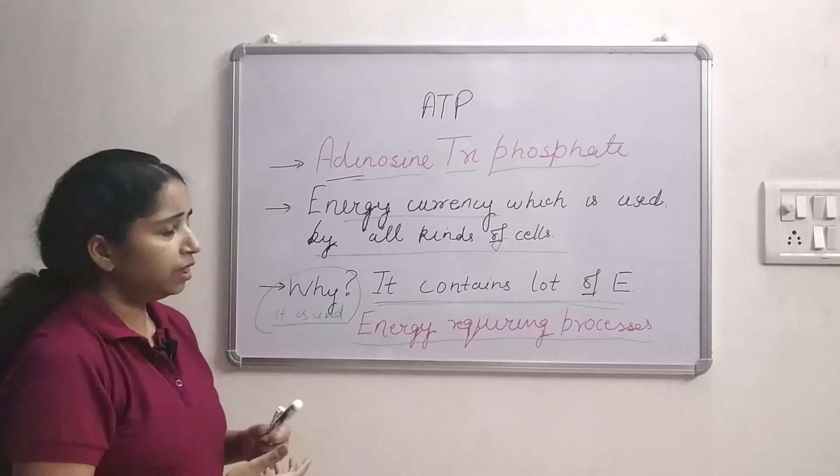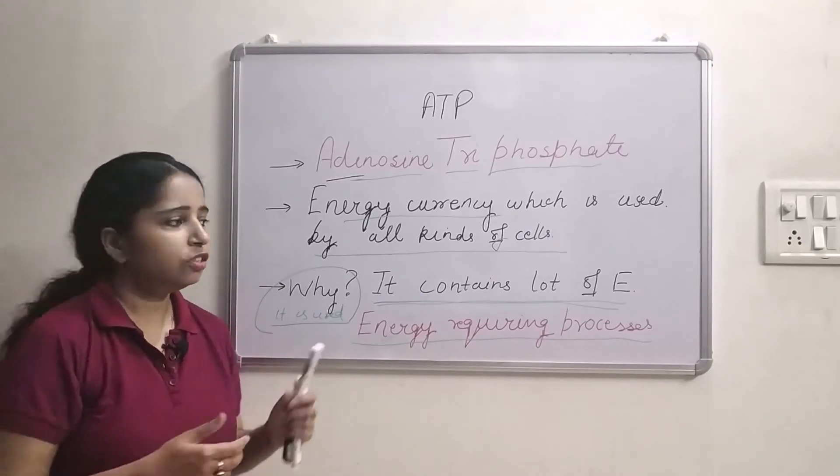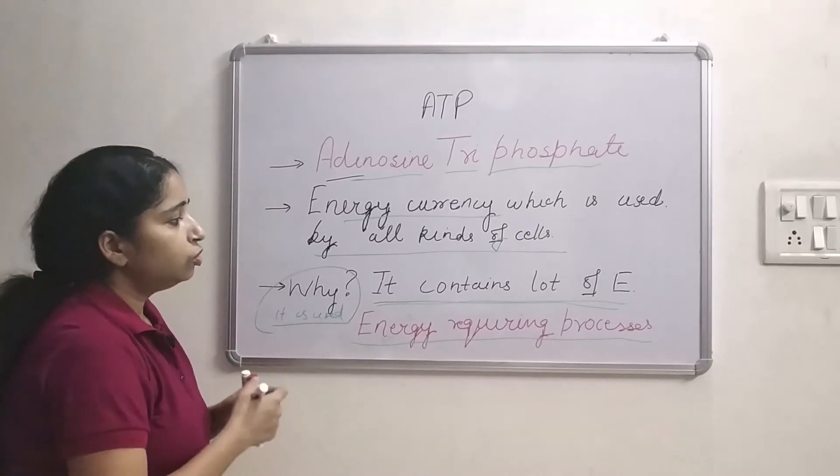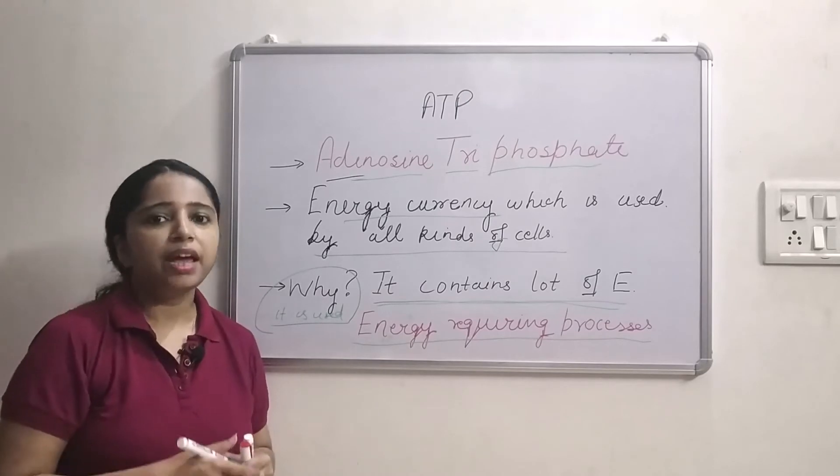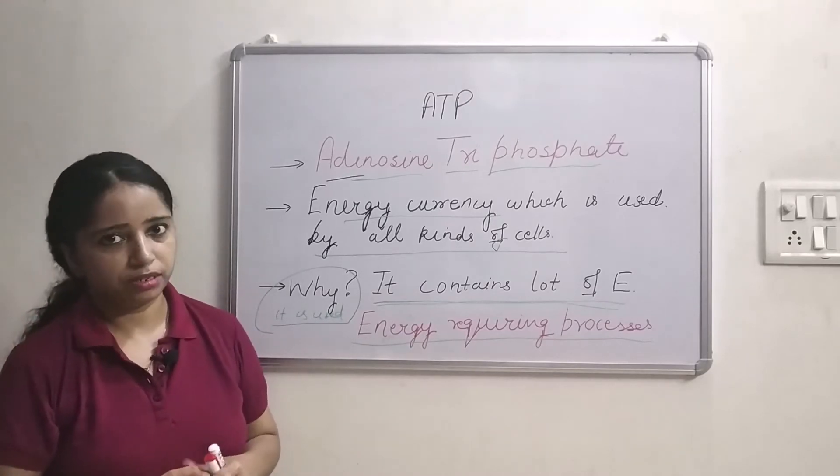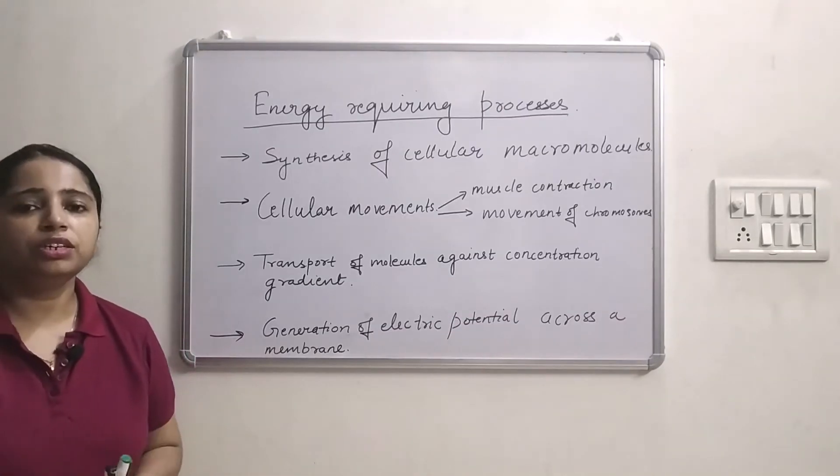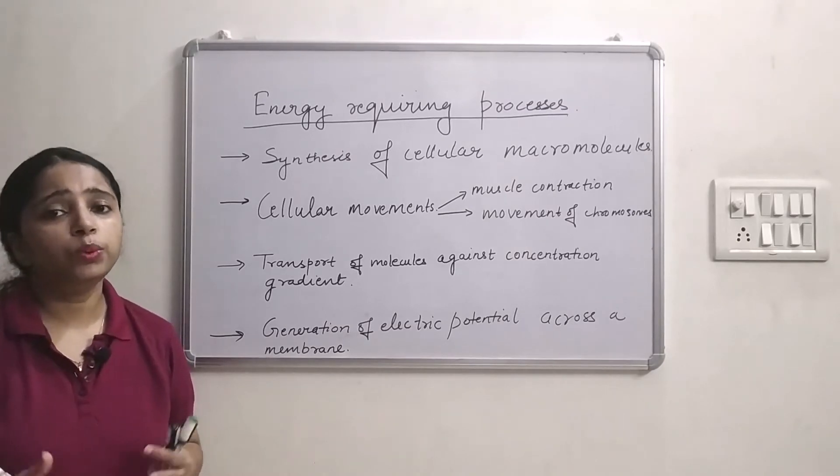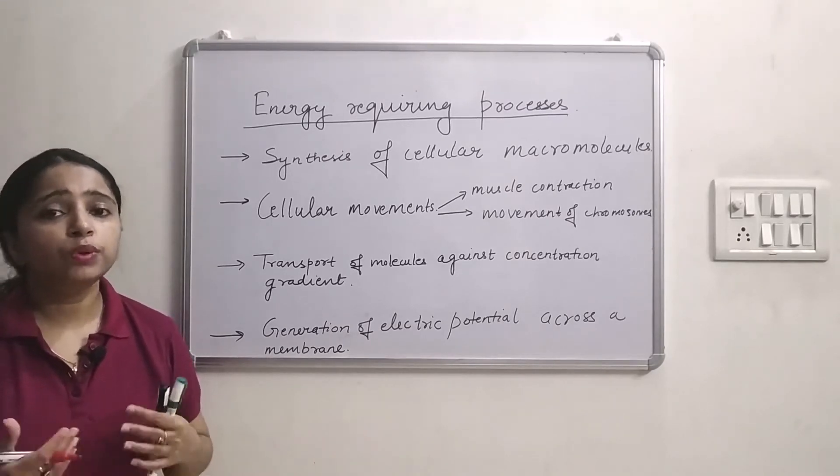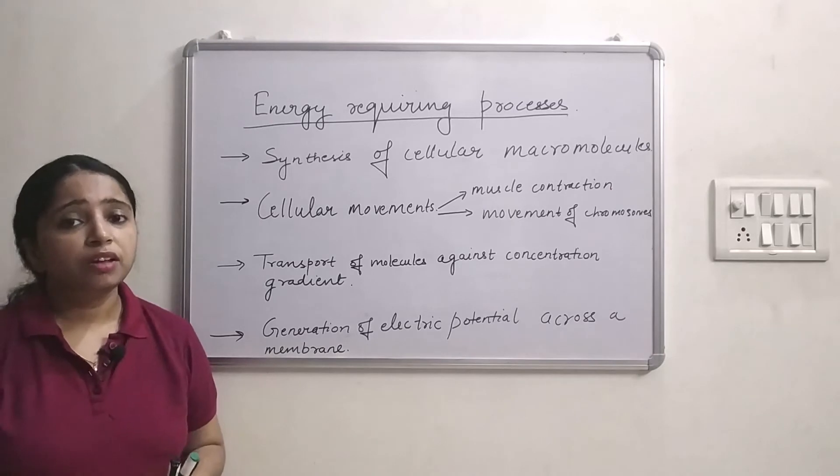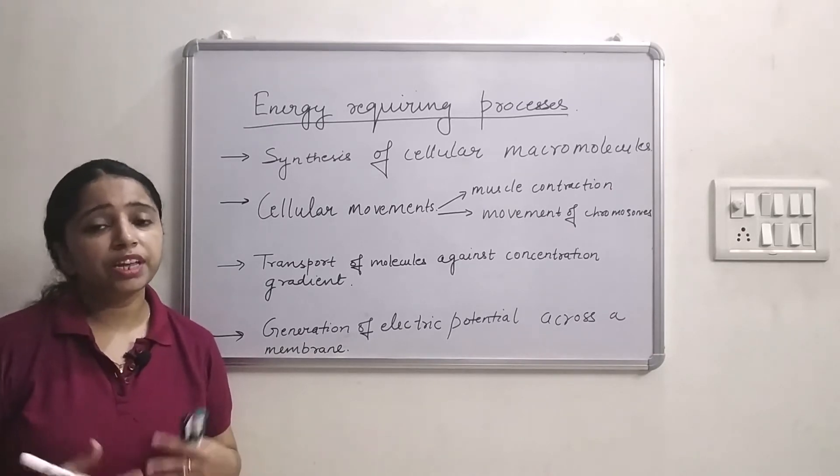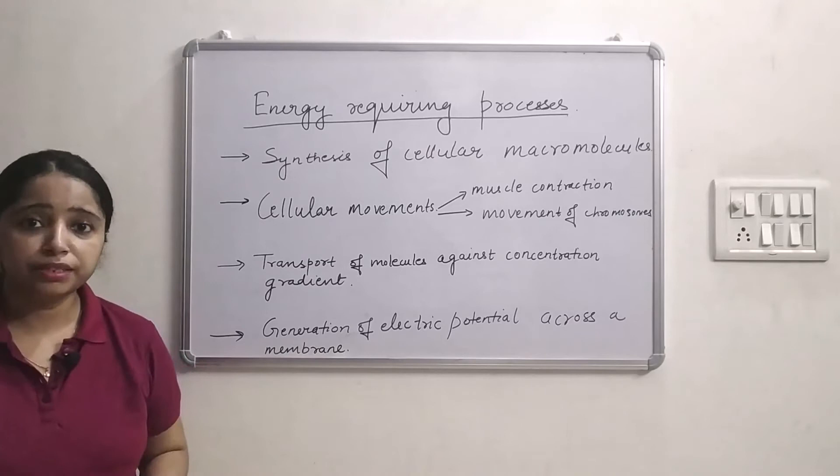So ATP, the energy of ATP is used by the cells to power to carry out their energy requiring processes. Now what are those energy requiring processes which occur in a cell which require energy from ATP or which use ATP as an energy currency?